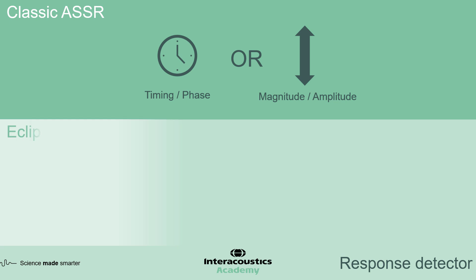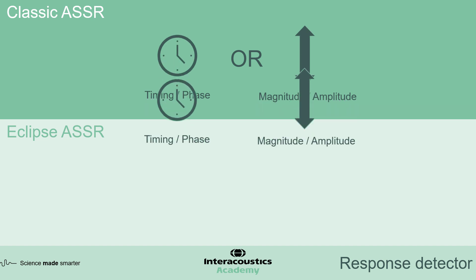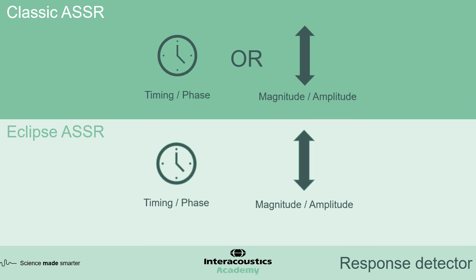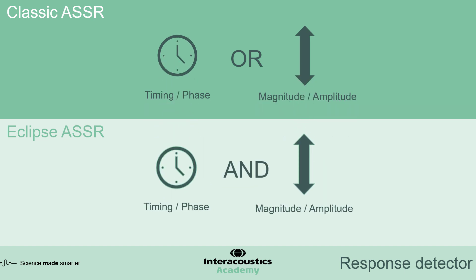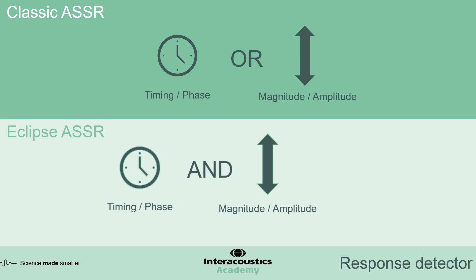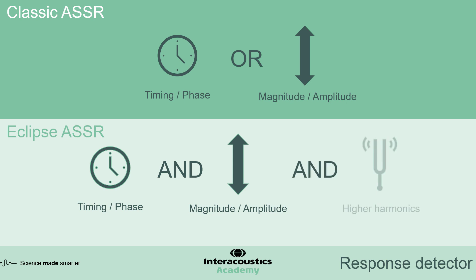The Eclipse ASSR uses both of these methods in combination, so both the phase and the magnitude of the response are considered. More importantly, Eclipse ASSR also looks at response components that none of the previous systems consider at all. These extra response components are the higher harmonics of the response.